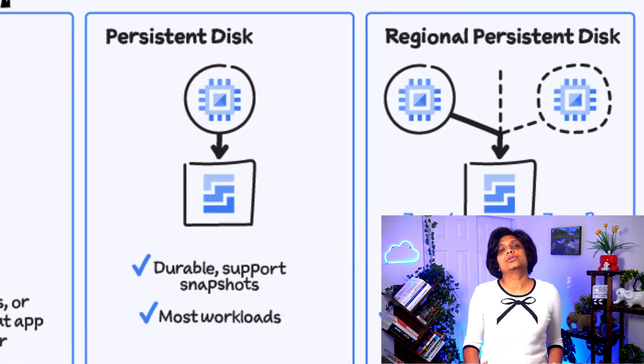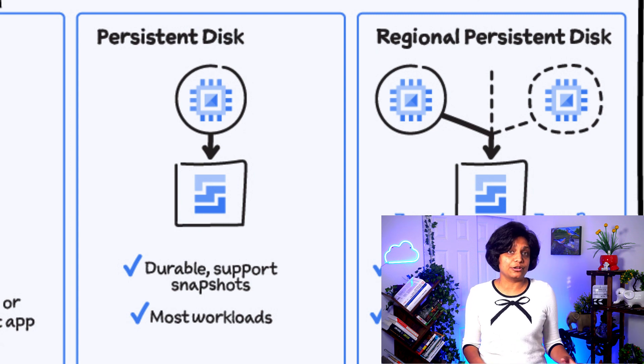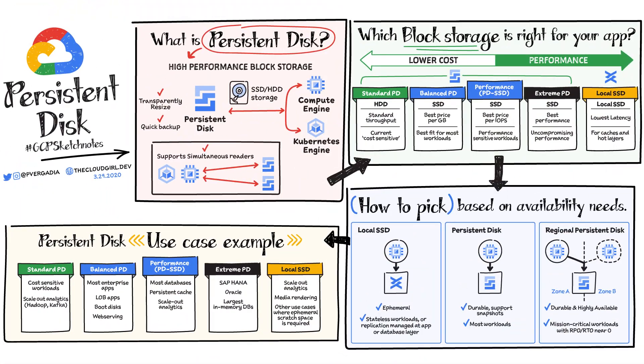For most workloads, you would be fine with Persistent Disk — it is durable and supports automated snapshots. But if your app demands even higher availability and is mission critical, there is an option to use regional Persistent Disk, which is replicated across zones for near-zero RPO and RTO values. That was a quick overview of block storage options in Google Cloud: Persistent Disk and local SSD.